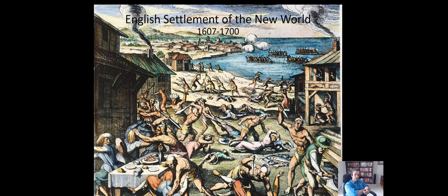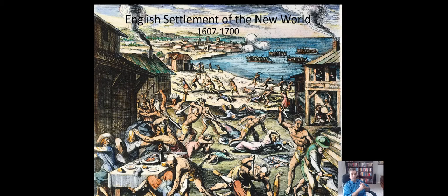Today we're going to be talking about English settlement of the New World. We're going to explain why, in spite of the fact that you had American Indians all throughout the North American continent, and in spite of the fact that the Spanish showed up in 1492, the English will come to be the legal and cultural backbone of what's today the United States. Why is English the predominant language? Why does the judicial system reflect England's rather than Spain's? Why don't American Indians retain control?